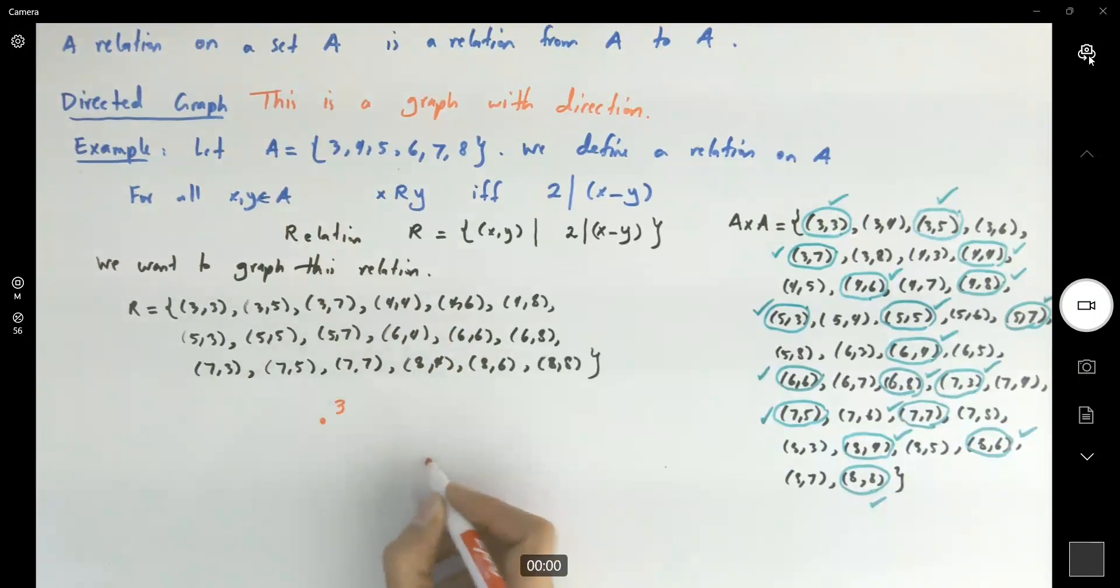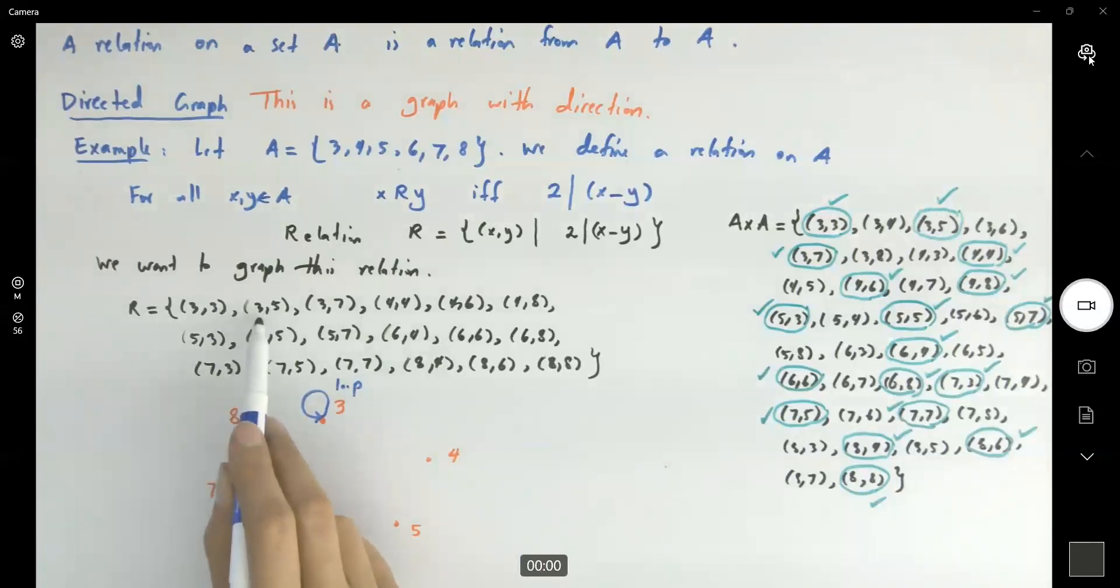Let me just write this here. We have a 3, we have a 4, we have a 5, we have a 6, we have a 7 and we have an 8. Very good. So let us begin. 3 is connected to 3. You're going to put a loop on top of 3. This is a loop. 3 is connected to 5, from 3 going to 5 put an arrow starting from 3 going to 5, starting from 3 going to 7, another arrow directed line.